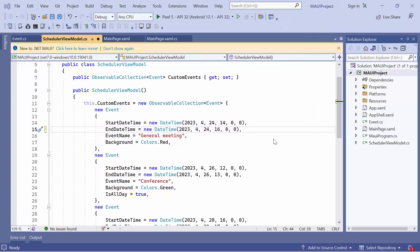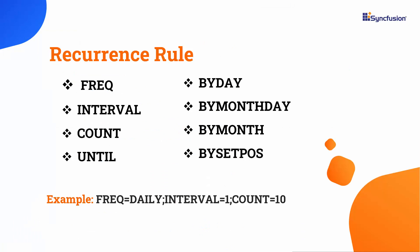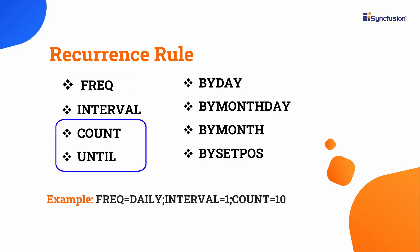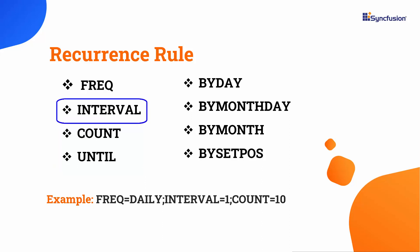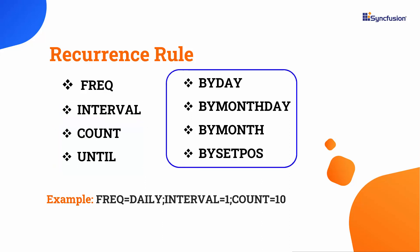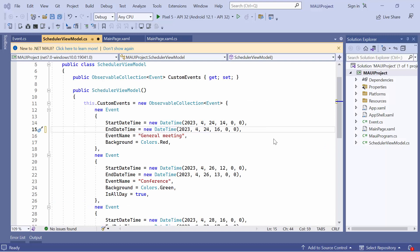If you want to repeat appointments at specific intervals, you can use the RecurrenceRule property along with a valid rule string. This property contains a string value that outlines the frequency of the appointments, such as daily, weekly, monthly, or yearly. It also includes information such as the number of times the appointment should repeat, the duration of the interval, and the time allocated for the appointment. Here, I want to schedule a general meeting appointment that repeats for 10 days.